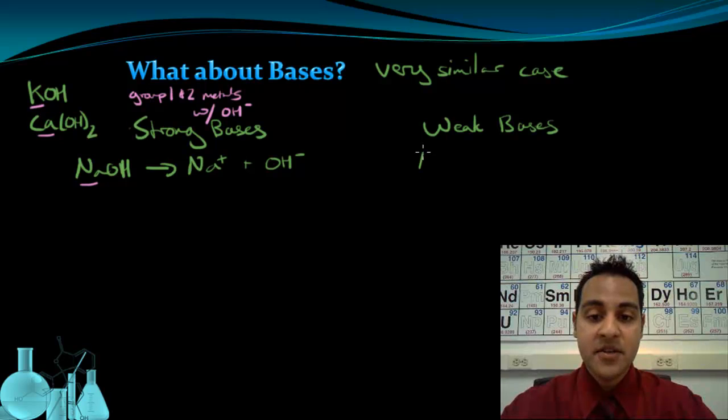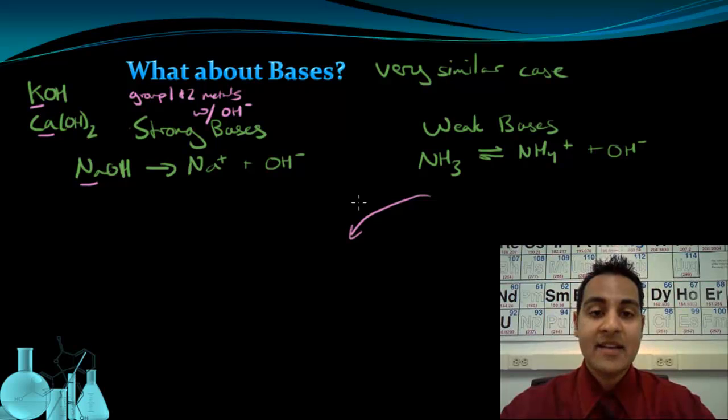An example of a weak base, on the other hand, is the NH3, ammonia molecule. And this only partially ionizes to NH4 plus and OH minus. And just like we did for the acids, I can create an equilibrium expression for this. So NH4 plus, one of the products, the concentration of the products are multiplied together, times OH minus concentration, over the concentration of the reactant, which is NH3.